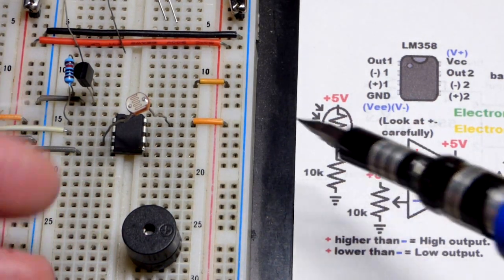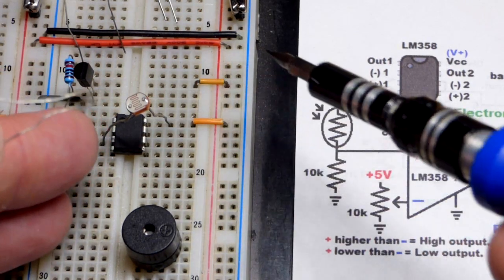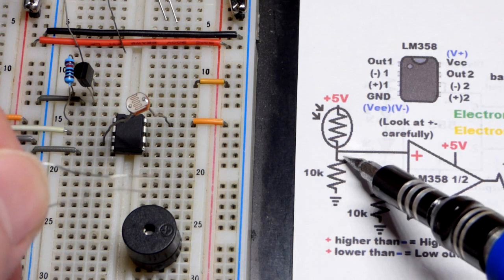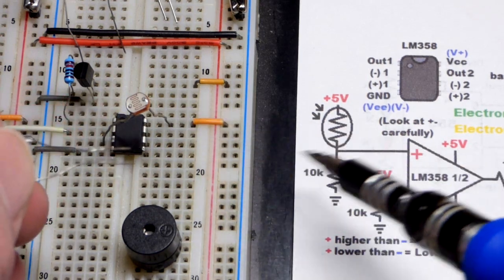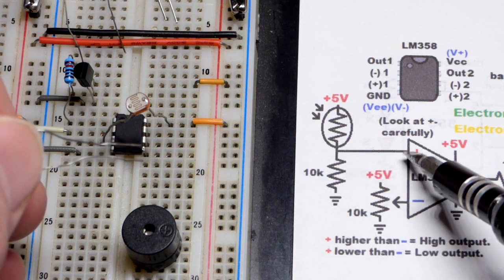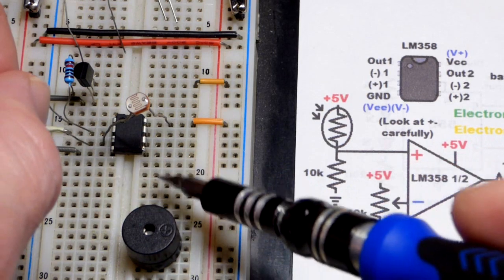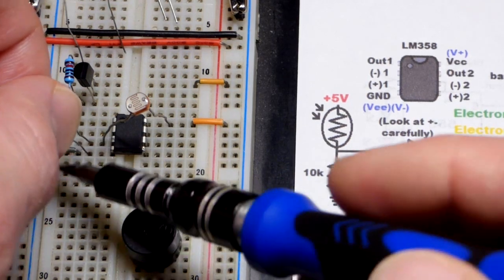There you can see we got pin 8 positive supply and pin 4 to the negative supply. Now we need to make a voltage divider. So under bright light it connects better to 5 volts, raises the voltage. But without this other resistor it's just 5 volts going across there.